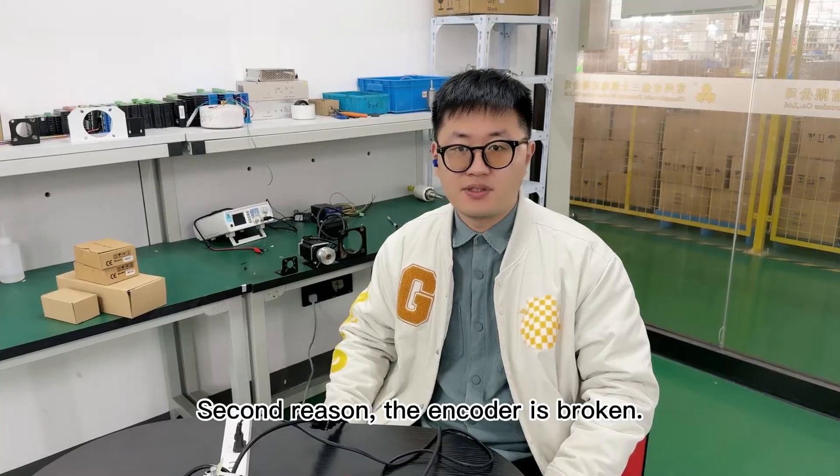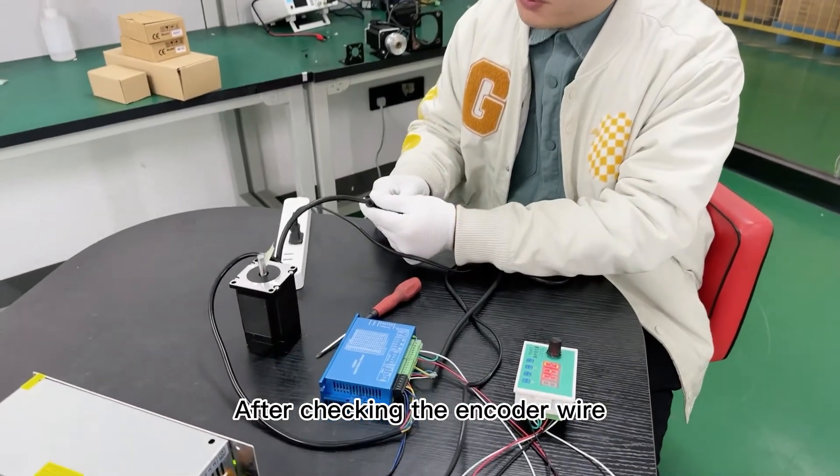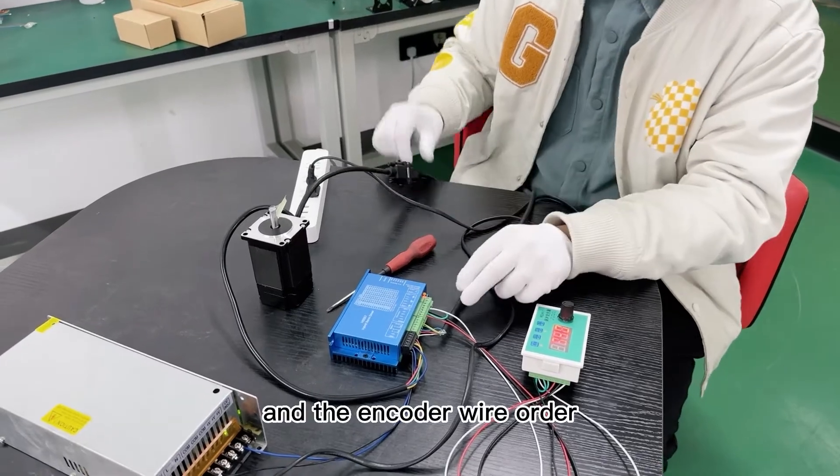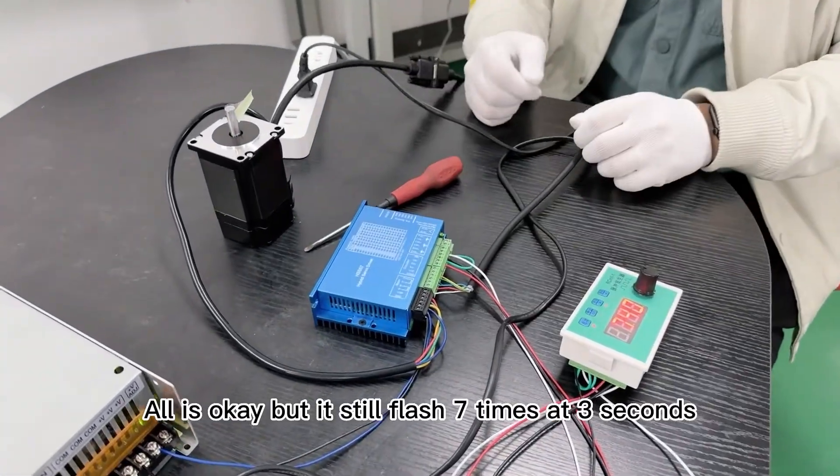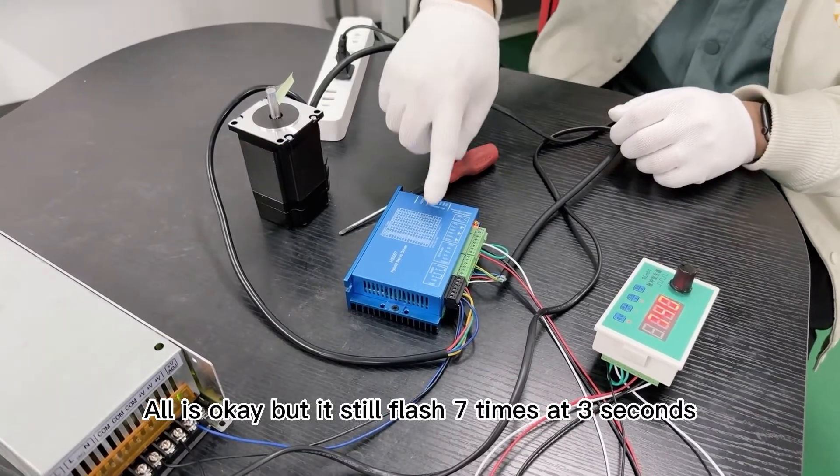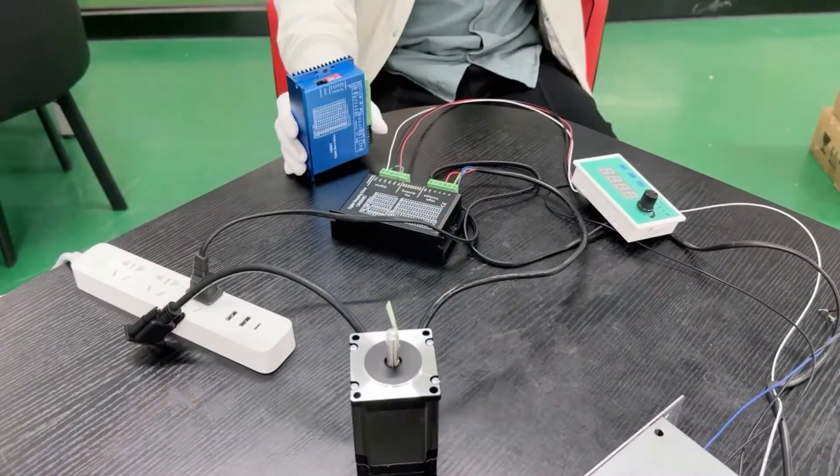Second reason: the encoder is broken. After checking the encoder wire and the encoder wire order, all is okay but it still flashes seven times within three seconds. At this time, we need to do further testing.